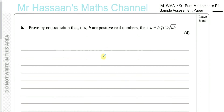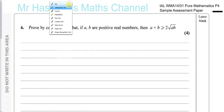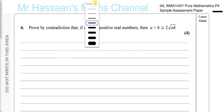For question number six from the Pure Mathematics for International A-Level sample assessment paper, this is a question from one of the topics new to the syllabus called proof by contradiction. Such questions won't be found in the old C4 or C34 papers. You'll find lots of questions like this, including this actual question, in the textbook.